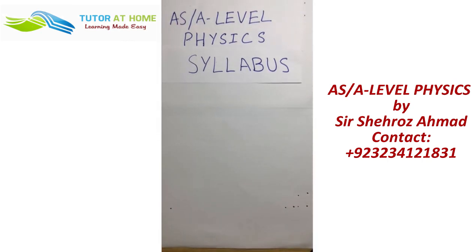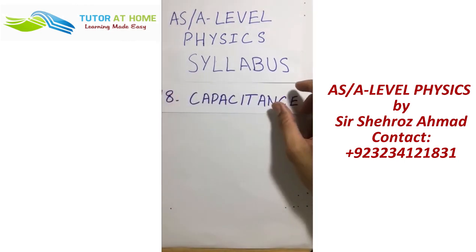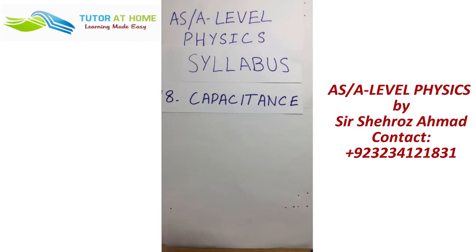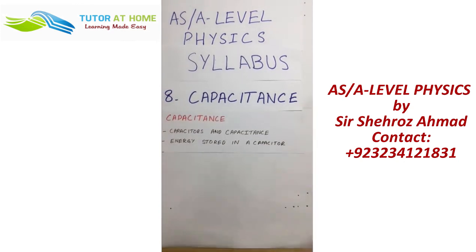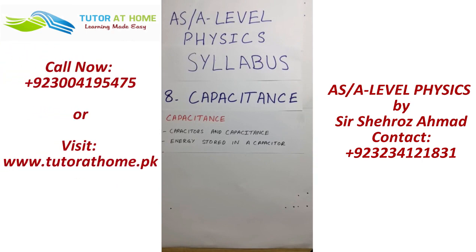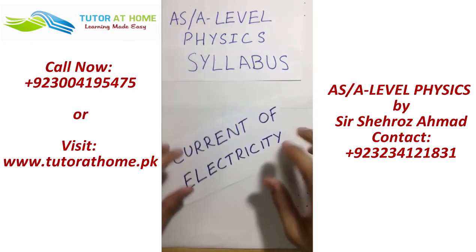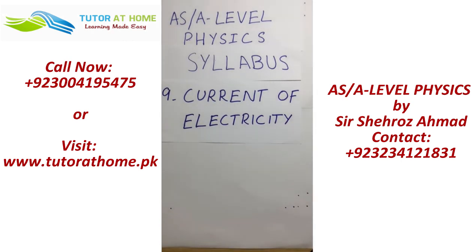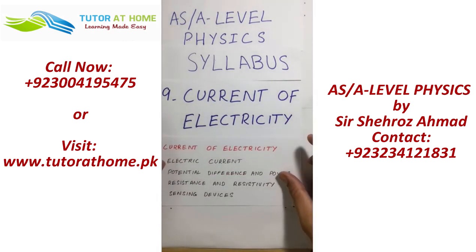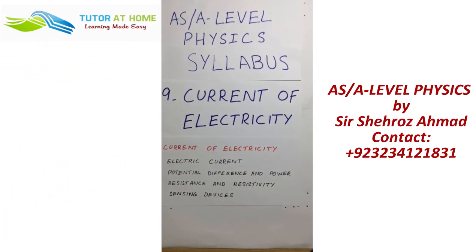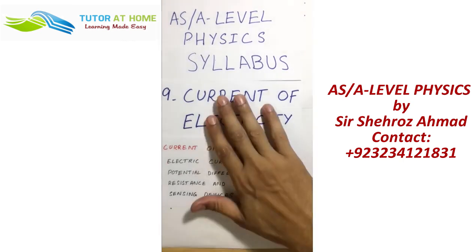The second chapter of electricity is about capacitance. After that, the next chapter is current of electricity. We will discuss electric current, potential difference, power, resistance, resistivity, and sensing devices. We will also cover the use of operational amplifiers in current of electricity and electrical power.